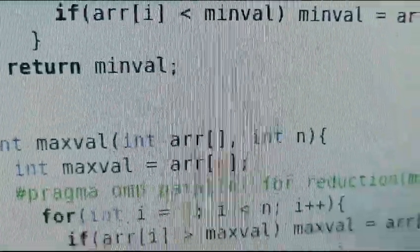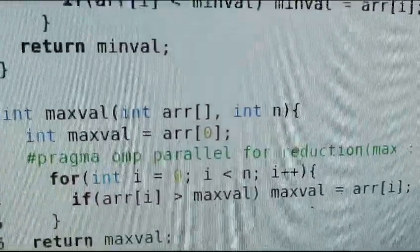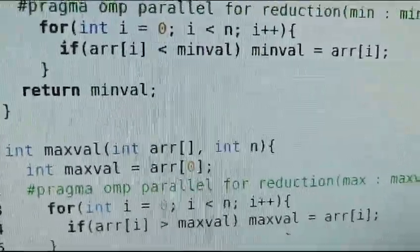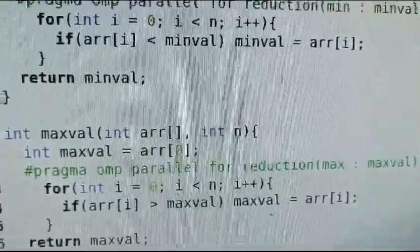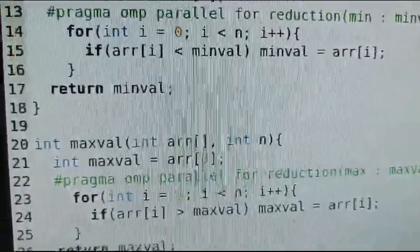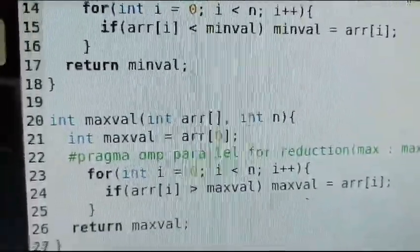The for loop iterates over each element of array. The condition is if arr[i] is greater than maxval, then maxval equals arr[i]. It updates maxval to be the current element, then returns the value.